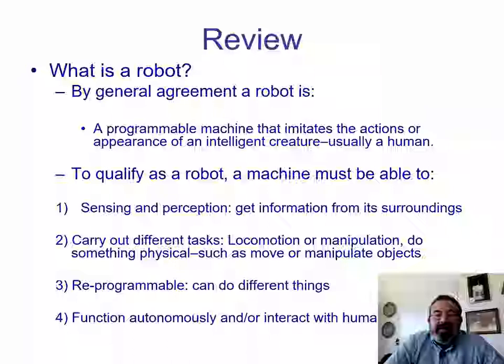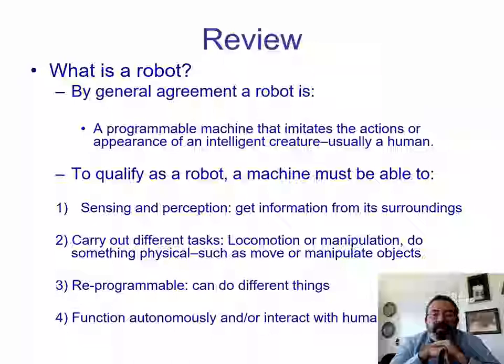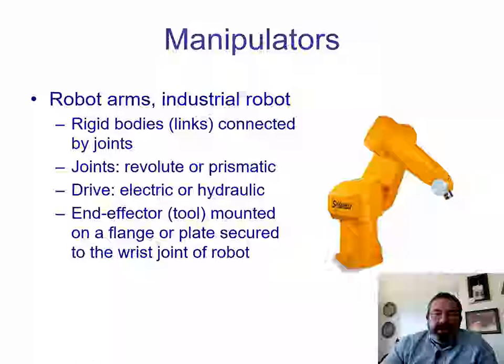A robot should also be reprogrammable in order to do different things, and finally, to function autonomously and/or interact with human beings. Now we're going to talk about manipulators. Manipulators are typical of robot arms, like an industrial robot, as we can see here in the slide.